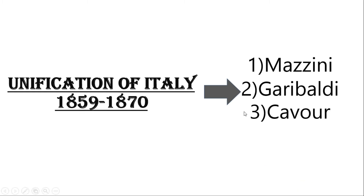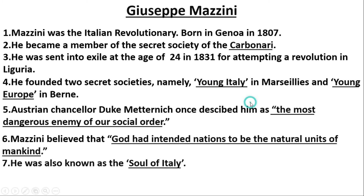First, let's talk about Giuseppe Mazzini. Mazzini was an Italian revolutionary born in Geneva in 1807. He became a member of the secret revolutionary society called the Carbonari, which was a secret revolutionary society. Mazzini was a member of this society.